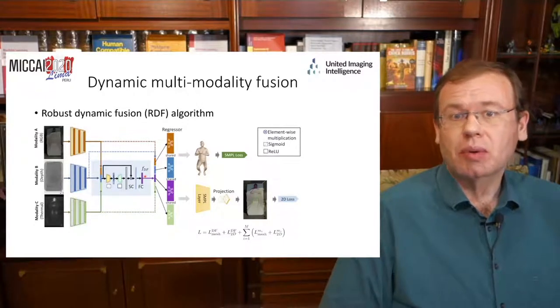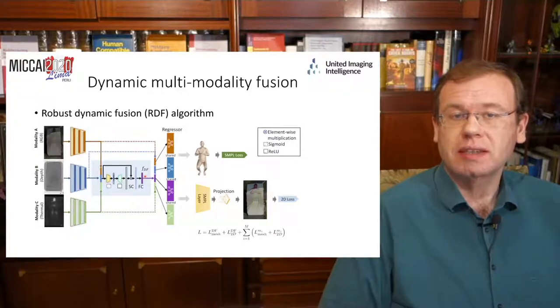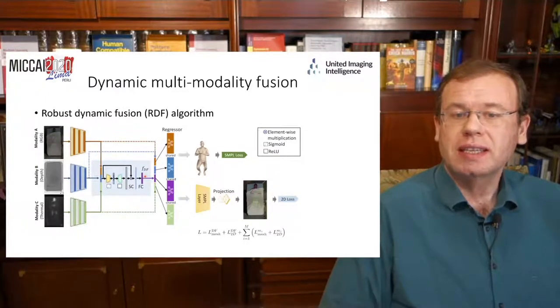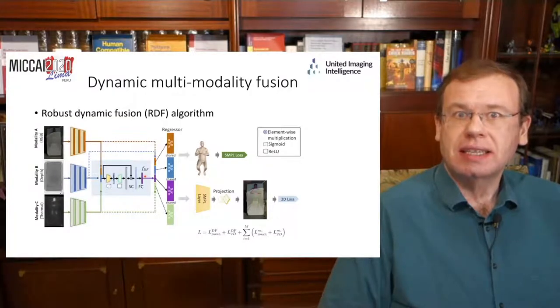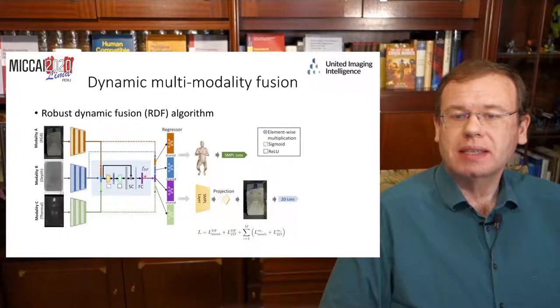So this paper now proposes to use multiple sensors to deal with the problem. So they have an RGB camera, they have a depth camera, and in addition a thermal camera that they then use in a kind of multitask loss setting in order to predict the 3D body model.